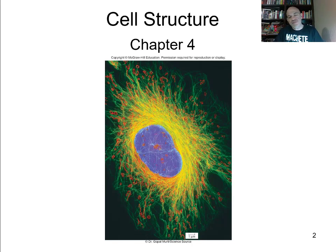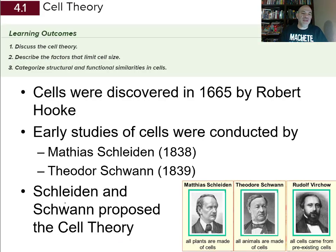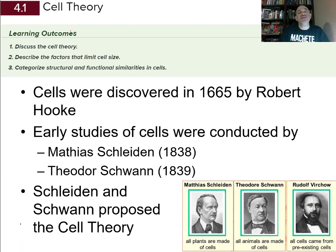This chapter, chapter 4, is going to cover cell structure — a basic unit of life called cells. We are going to look at our first section, which is on cell theory. Your learning outcomes are going to be to discuss the cell theory, describe the factors that limit cell size — cells can only get so big — and then categorize structural and functional similarities in cells.